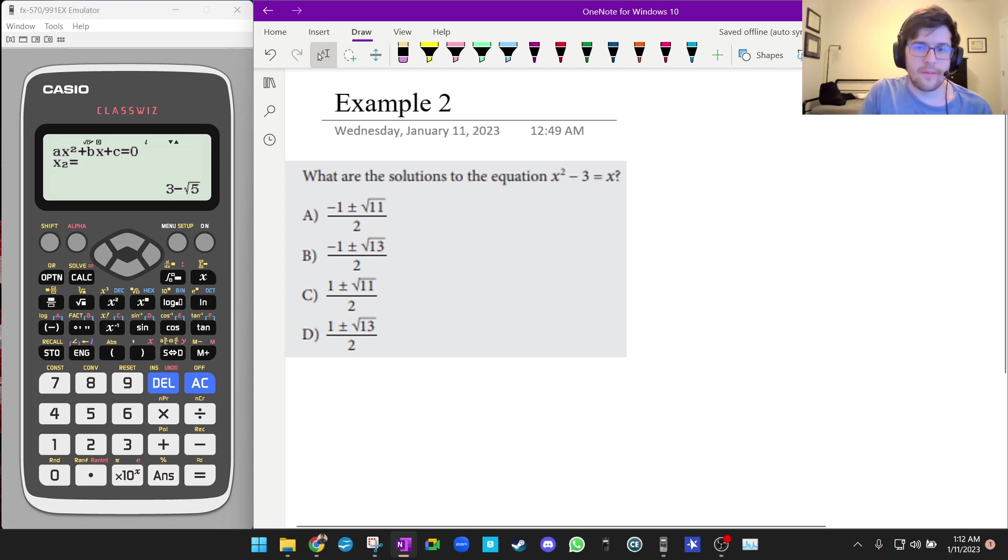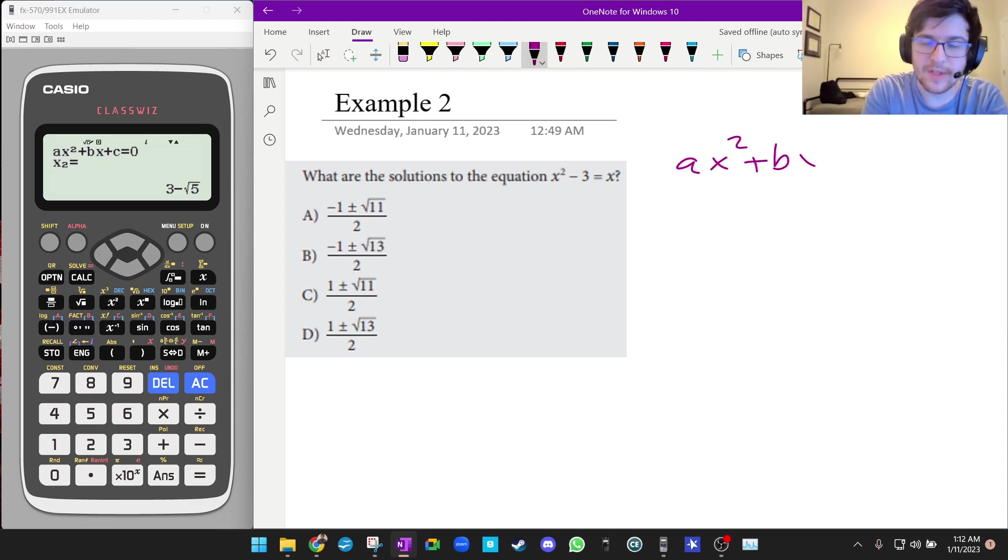First, this one has a little bit of an extra step. We need to again compare it to ax² + bx + c = 0. You need to realize that this term is not on the correct side of the equation, so we've got to move it over. To do that, we're going to subtract x from both sides and write it in standard form: x² - x - 3 = 0.